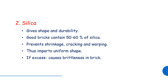The other ingredient is silica. Silica gives the brick good shape and durability. Silica makes up 50-60% of the ingredient. It provides uniform shape by reducing shrinkage, cracking, and warping.